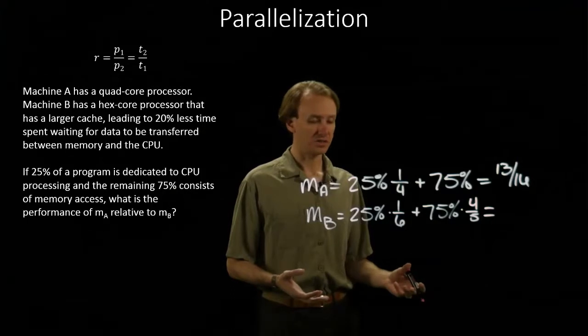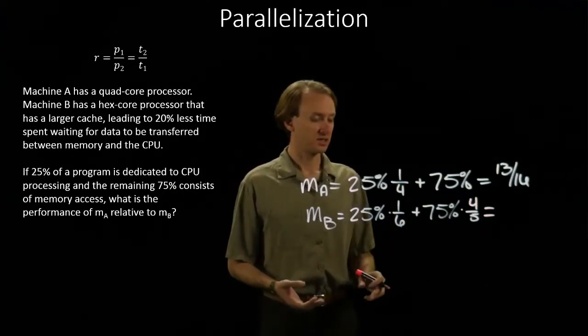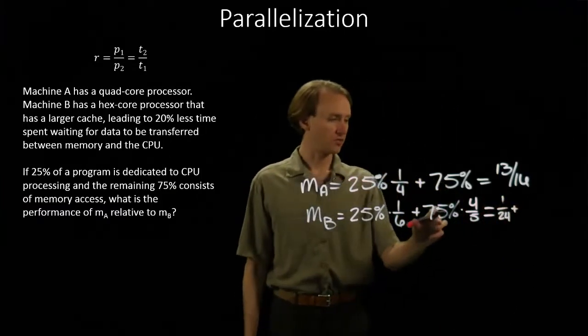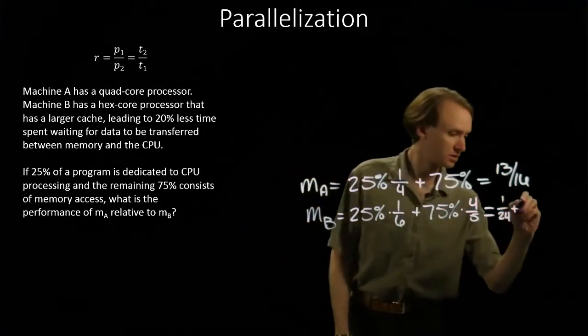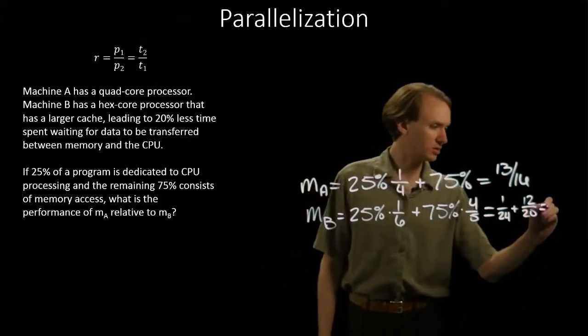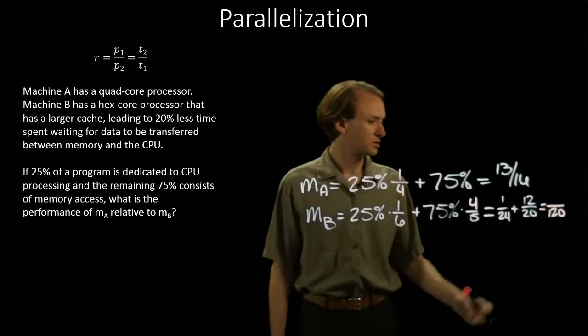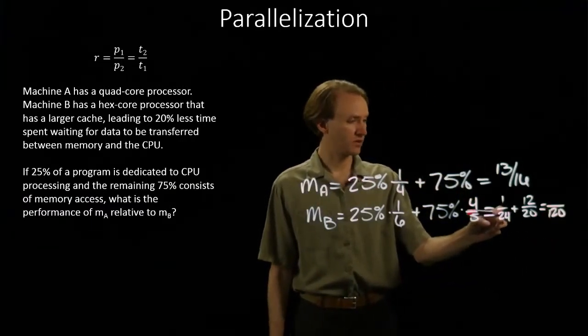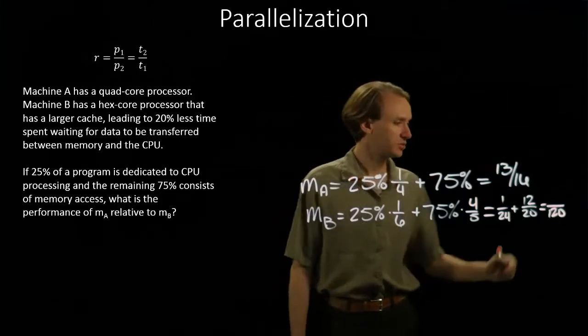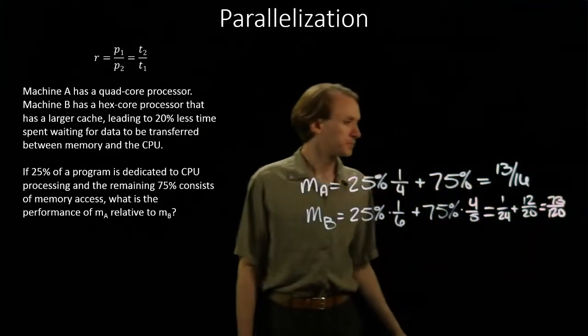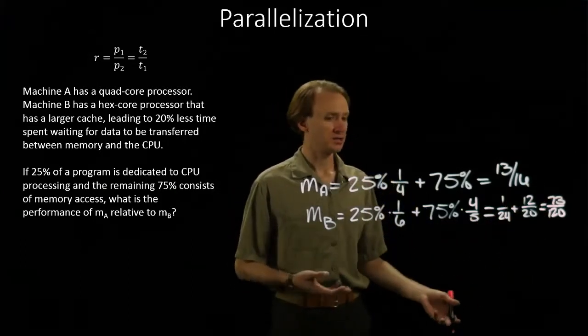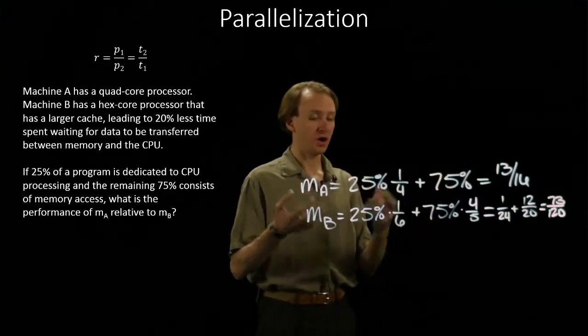And then add all of these up. So I've got a one-fourth times a one-sixth gives me one-twenty-fourth. And then I have three-fourths times four-fifths gives me twelve-twentieths. So my common denominator here will be one-twentieths. I'll need to multiply this term by five, this term by six. So five plus seventy-two is seventy-three.